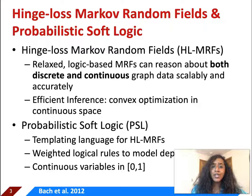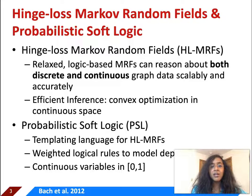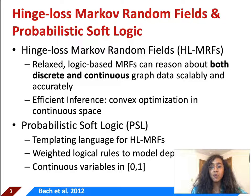In this paper we introduce Struct-MMSB, which has a structured prior encoded with it to capture the dependencies that exist in real-world networks. We use hinge-loss Markov random fields (HLMRFs) to encode this structured prior. HLMRFs are relaxed logic-based Markov random fields that can reason about both discrete and continuous graph data scalably and accurately. They have efficient inference, which is convex optimization in continuous space.